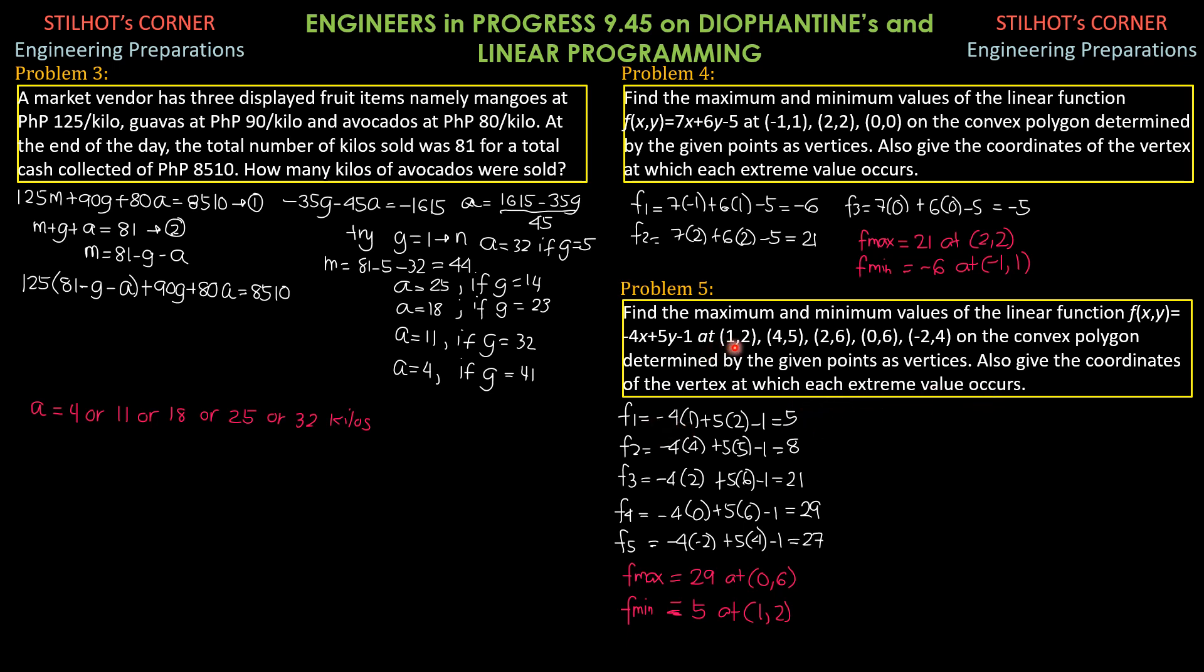First point, F at 1 comma 2. This is the objective function. Negative 4 times 1 plus 5 times 2 minus 1 is positive 5. F of 2 at 4 comma 5. Negative 4 times 4 plus 5 times 5 minus 1, 8. F of 3 at 2 comma 6, negative 4 times 2 plus 5 times 6 minus 1, 21.